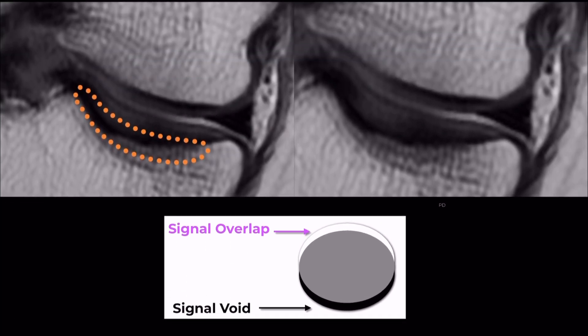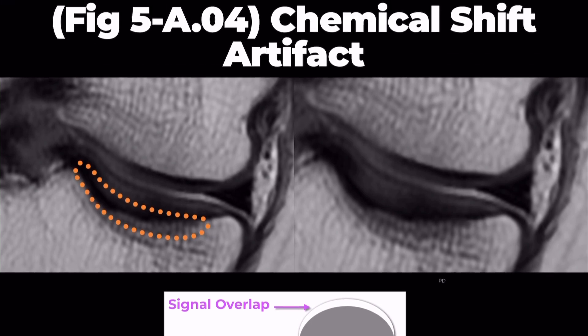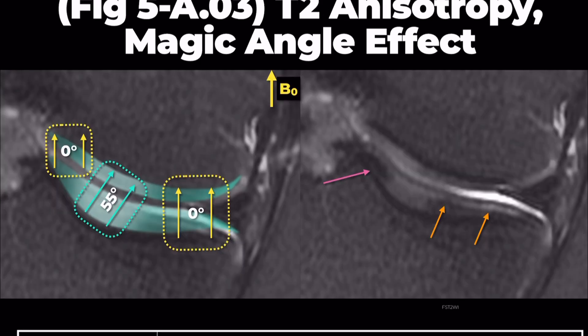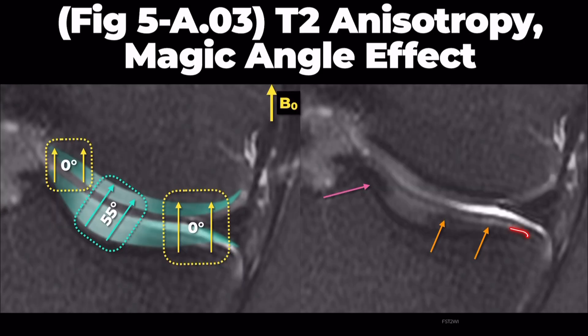We might overestimate the thickness of the subchondral bone plate, which in turn leads us to overestimate the depth of a cartilage lesion. The linear truncation artifact, indicated by the orange arrows, is also visible.